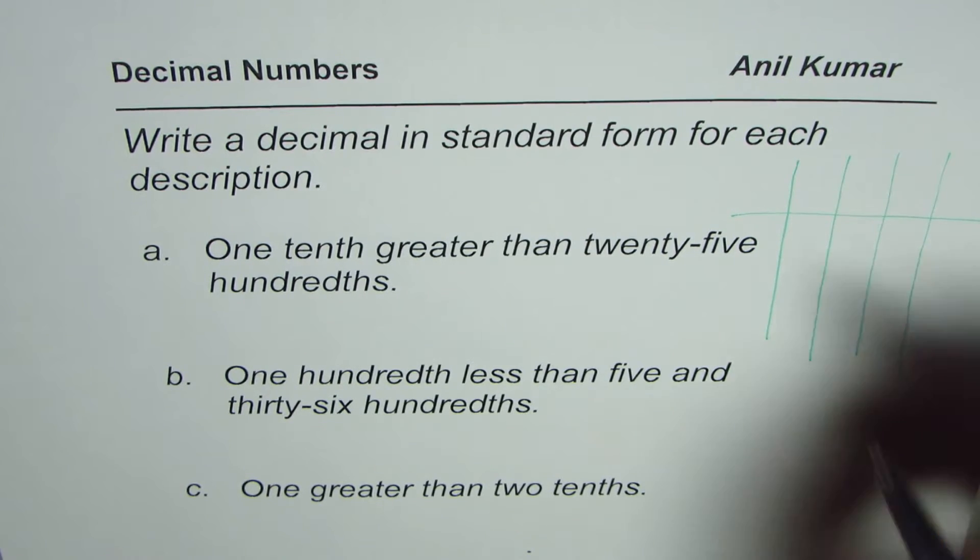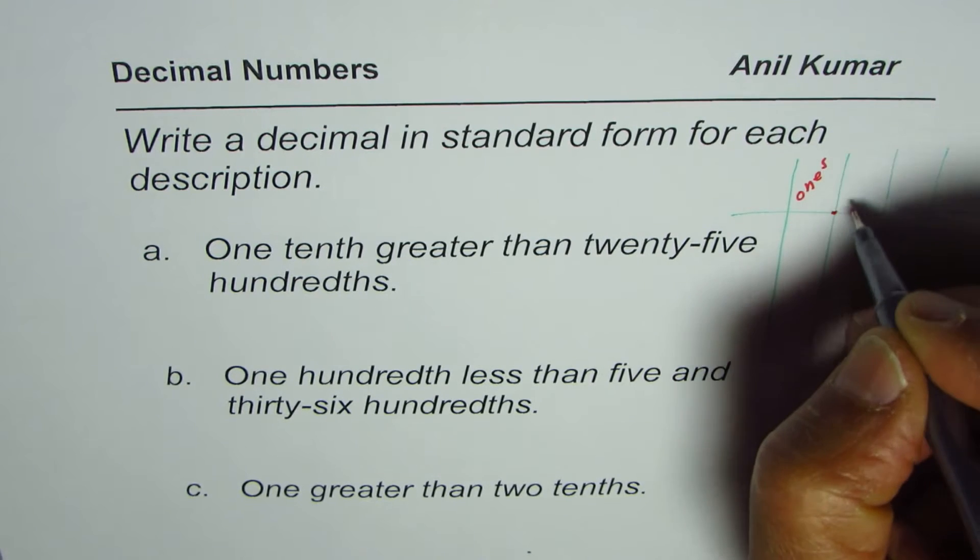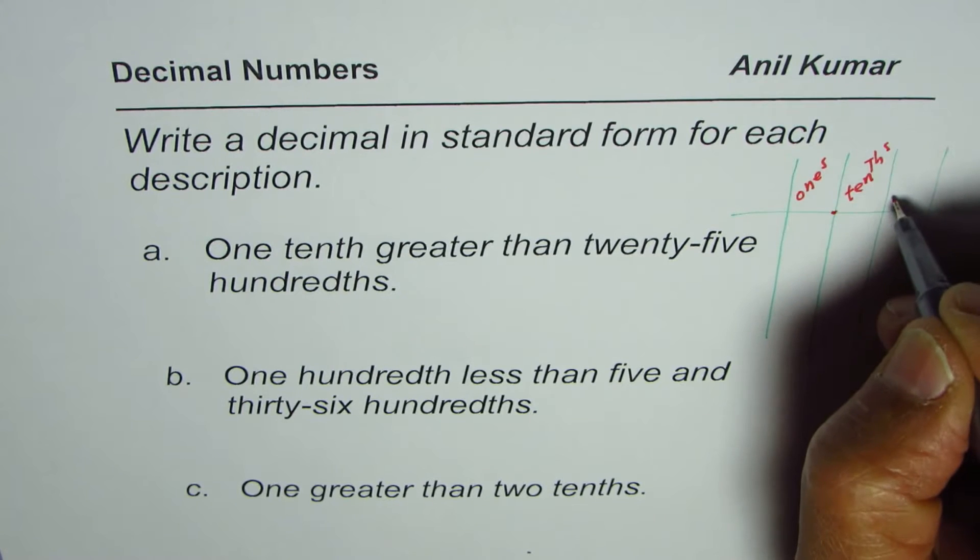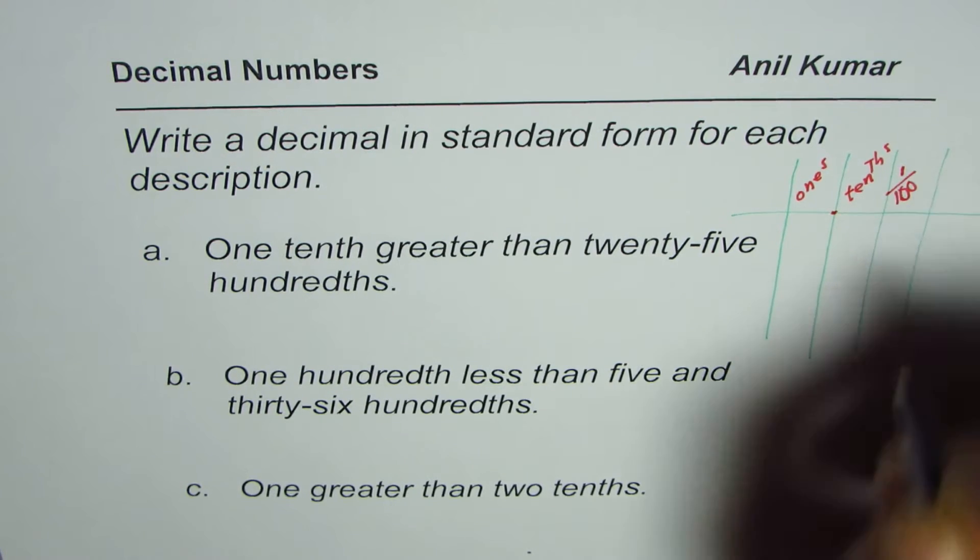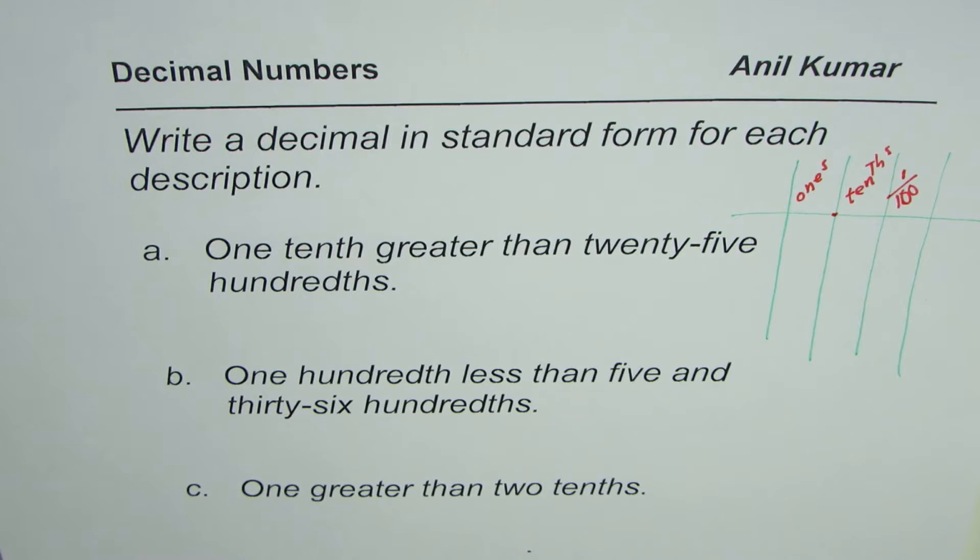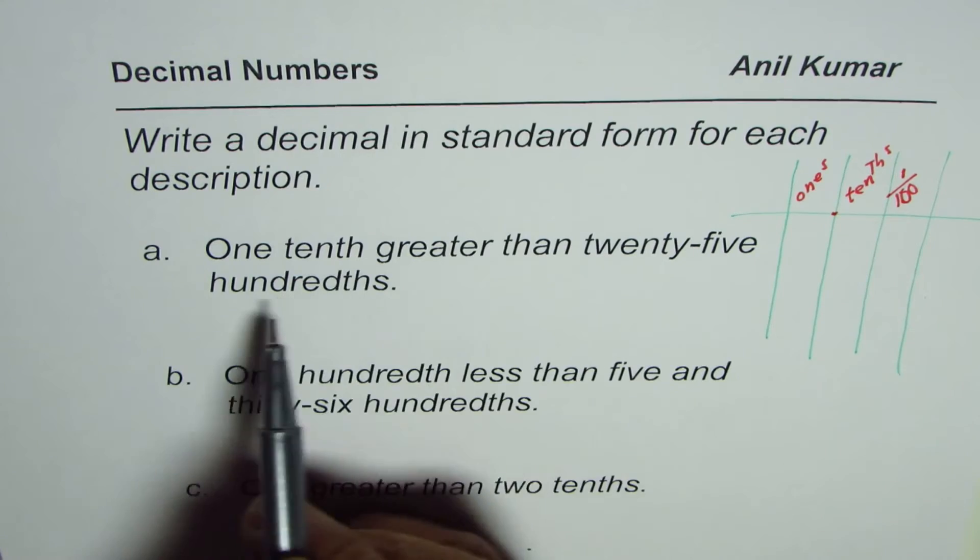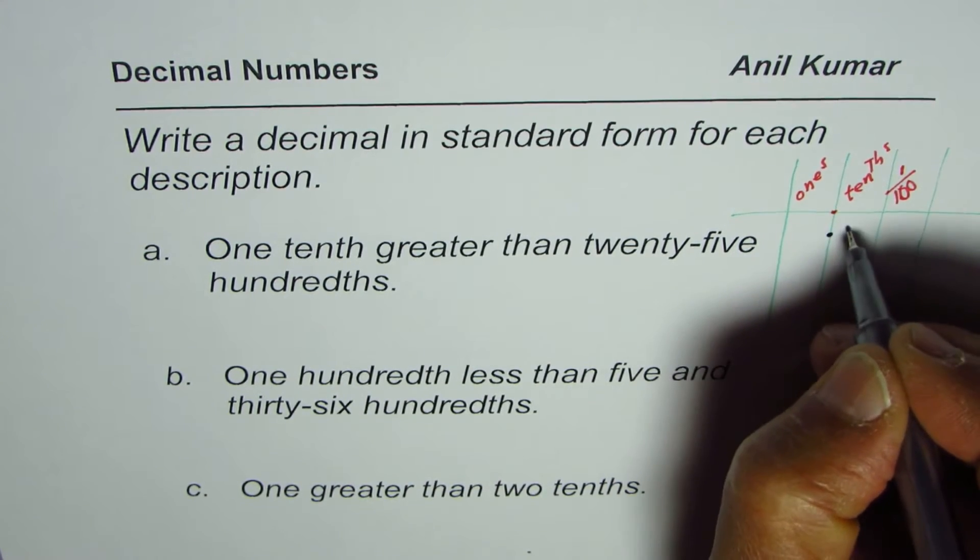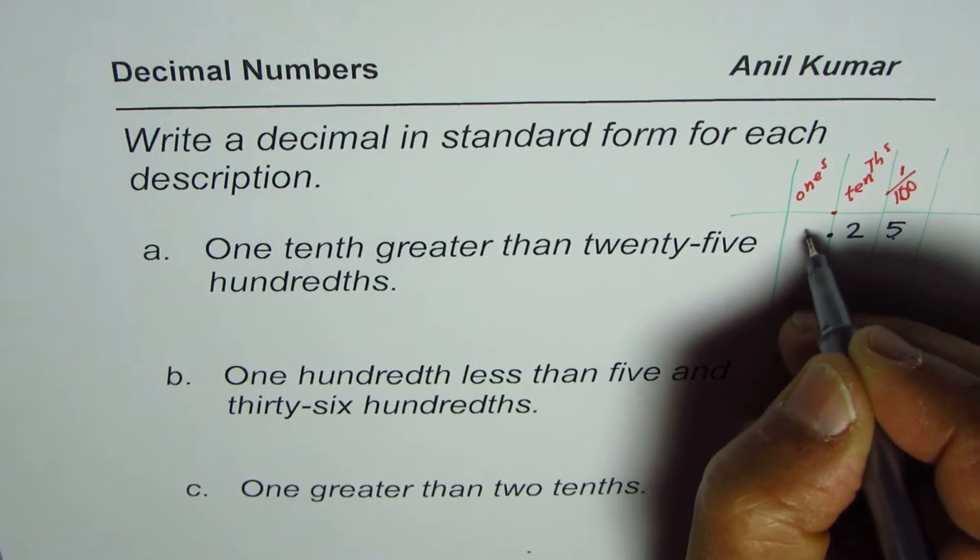We will use this as one's place. And then we have tenths and hundredths. Let me write this as one over one hundred, that is hundredths. So when we say one-tenth greater than twenty-five hundredths, what is twenty-five hundredths? Twenty-five hundredths means after the decimal, we have two five. That is twenty-five hundredths.